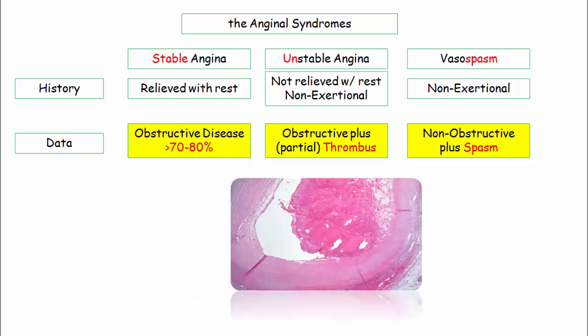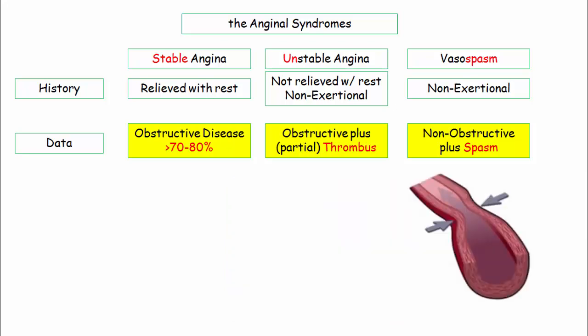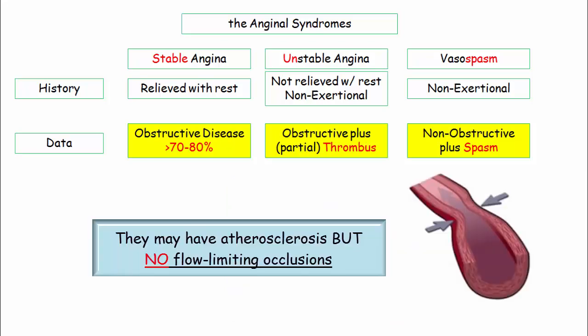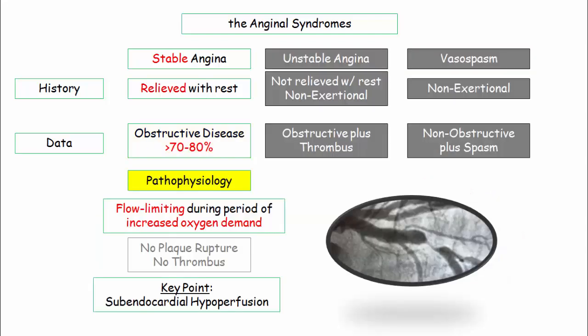The patient with unstable angina has an underlying atherosclerotic lesion with a superimposed partially occluding thrombus. The patient with vasospastic angina, by definition, cannot have any evidence of obstructive disease — they may have some atherosclerosis, but it cannot be flow-limiting. In the patient with stable angina and coronary obstruction, the flow-limiting occlusion becomes symptomatic during periods of increased oxygen demand. This differs mechanistically from unstable angina, which is associated with plaque rupture and thrombus — the patient with stable angina has neither of these characteristics.